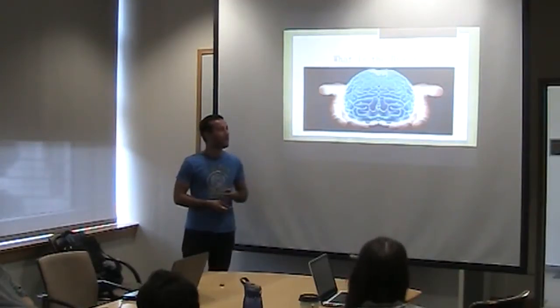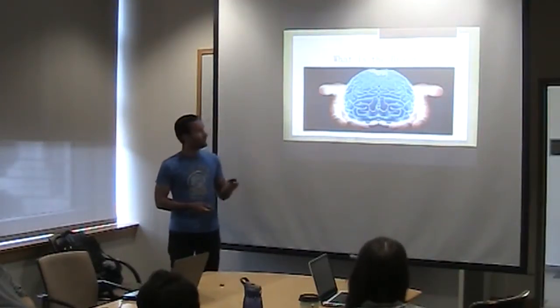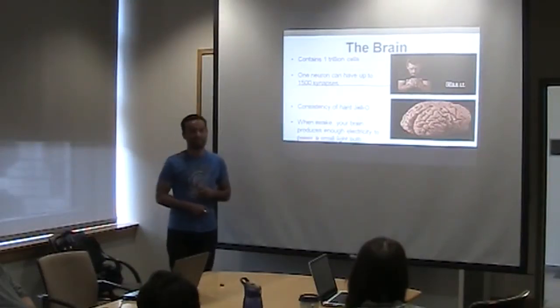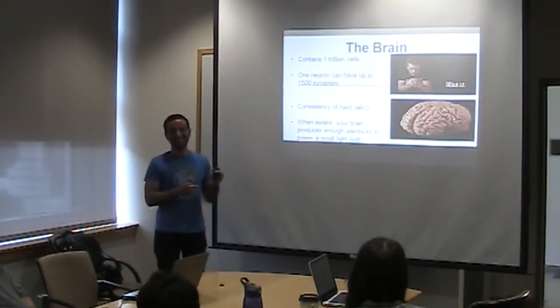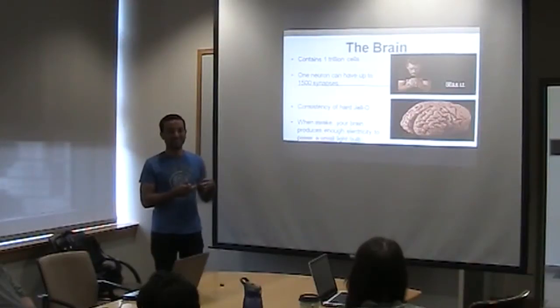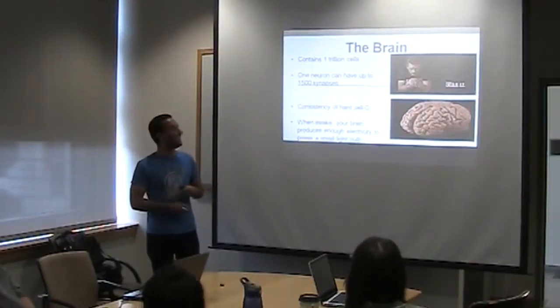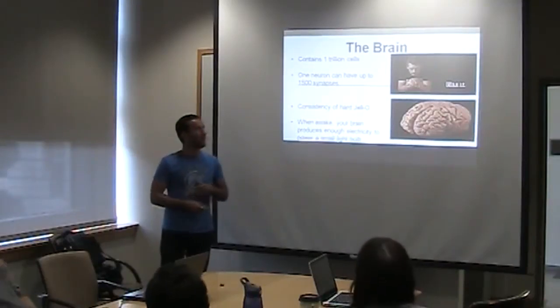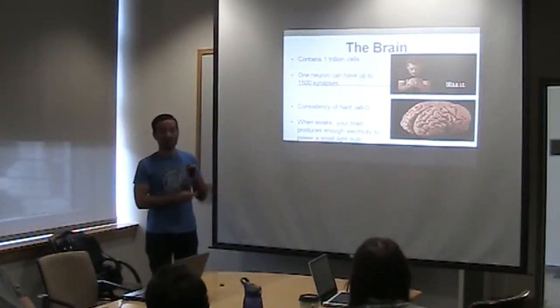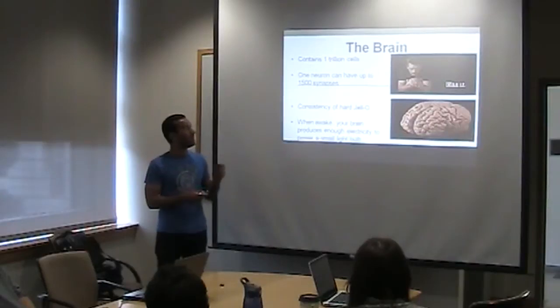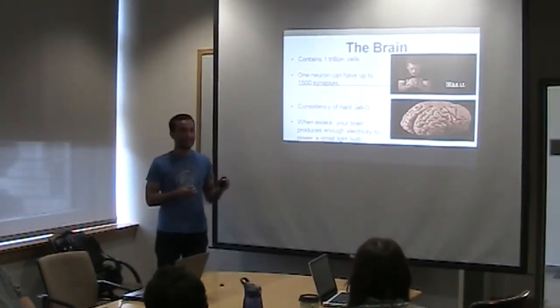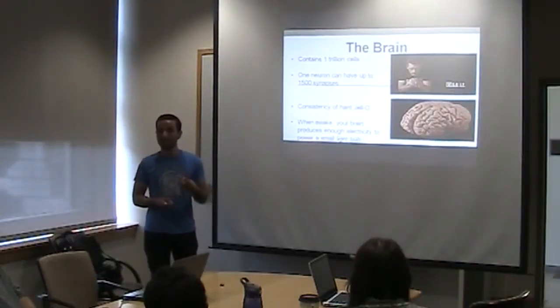To give you some random facts about the brain: the brain contains one trillion cells. One neuron, which is one brain cell, can have up to 1,500 synapses. Synapses are the connections that your brain cells have with each other. So if you imagine how we're talking to each other, one neuron can basically talk to 1,500 other neurons.